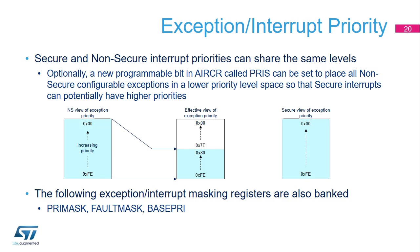Both secure and non-secure software are in charge of assigning a priority to any exception source — the lower the value, the higher the priority. A security issue could occur if non-secure software selects high priority levels close to zero in order to mask secure interrupts. The v8M features a secure control bit called PRI-S that shifts the non-secure programmed priority level one bit to the right, inserting a 1 to the left. The consequence is that effective non-secure priority levels are in the range 0x80 to 0xFE. Thus any secure interrupt can be programmed with a higher priority than non-secure ones. The v7M priority boosting registers PRI-MASK, FAULT-MASK, and BASE-PRI, used to set the execution priority level, are banked in the v8M mainline between secure and non-secure states.